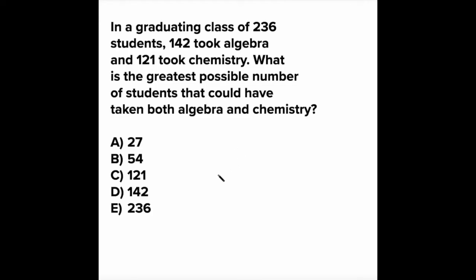In a graduating class of 236 students, 142 took algebra and 121 took chemistry. What is the greatest possible number of students that could have taken both algebra and chemistry?